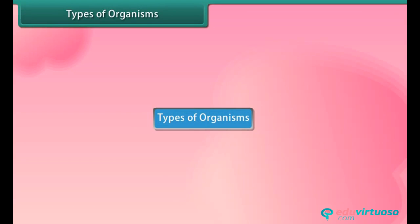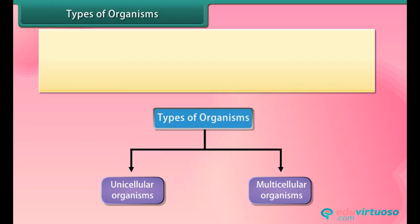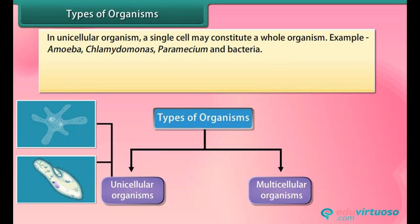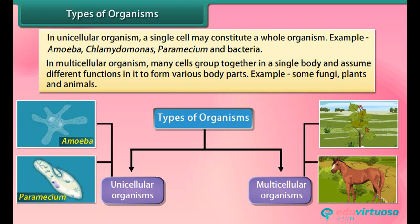There are two types of organisms: unicellular organisms and multicellular organisms. In unicellular organisms, a single cell may constitute a whole organism. Examples include amoeba, chlamydomonas, paramecium, and bacteria.